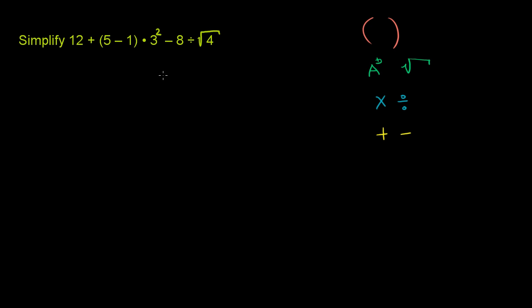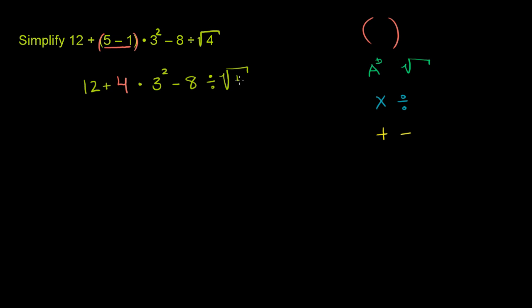So let's apply that to this over here. We have one set of parentheses, and inside you have 5 minus 1. We want to evaluate that first. 5 minus 1 is 4. So our problem becomes 12 plus 4 times 3 squared minus 8 divided by the principal root of 4.